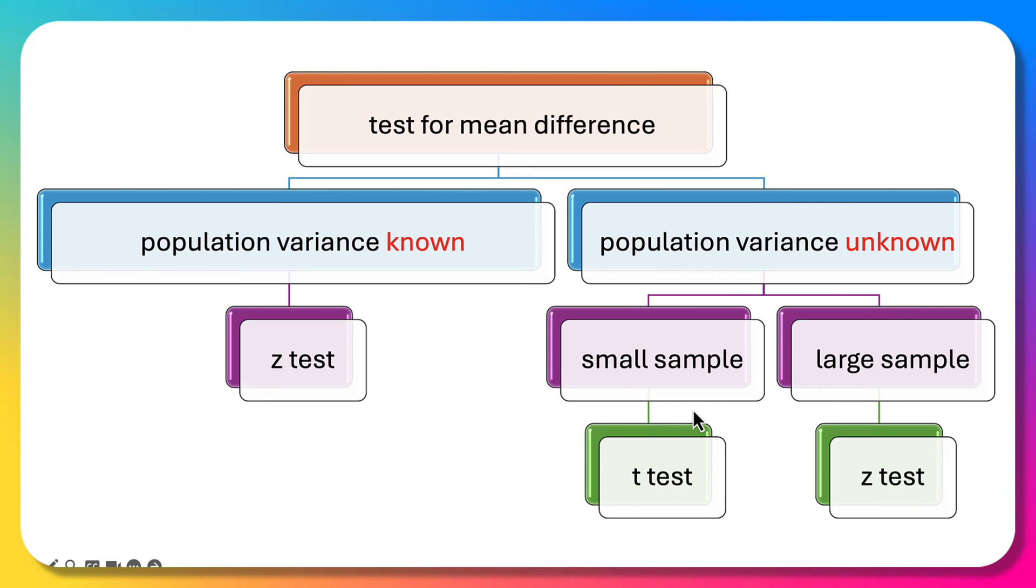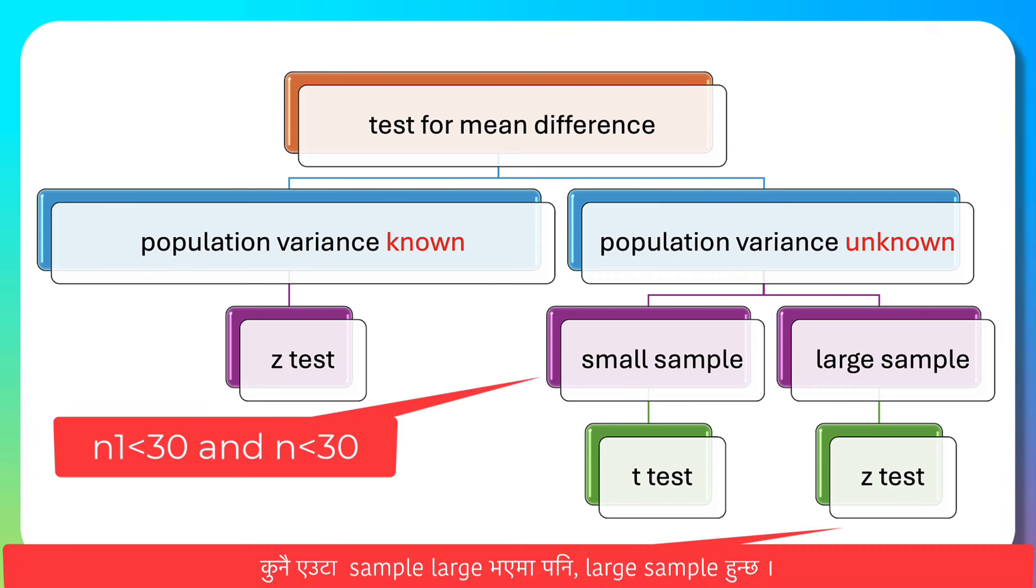For sample sizes, when n1 is less than 30 and n2 is less than 30, we have a small sample. When both sample sizes are 30 or greater, we have a large sample.